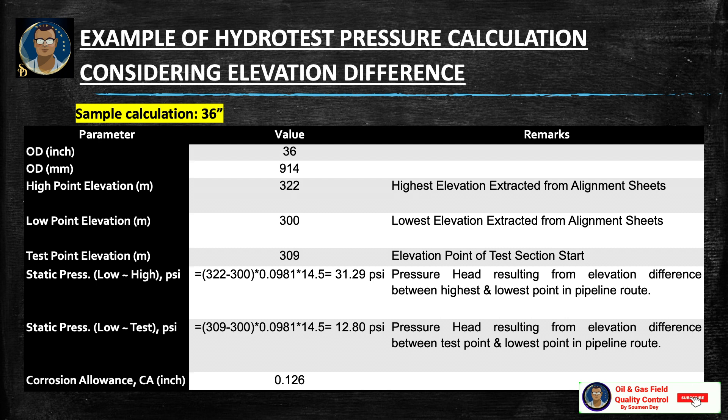The static pressure from elevation difference (low minus high) = (322 − 300) × 0.0981 × 14.5 = 31.29 psi. This is the pressure head resulting from the elevation difference between the highest and lowest points in the pipeline route. The static test pressure difference from the test cabin to the lowest point is 12.8 psi. Corrosion allowance is 0.126.